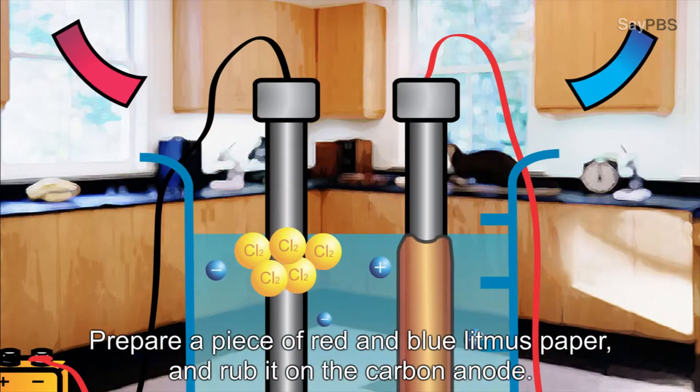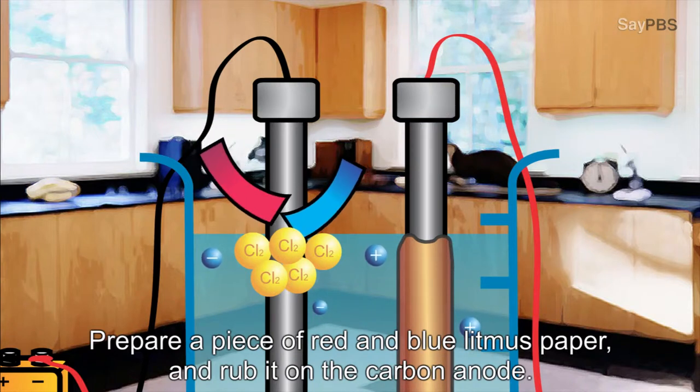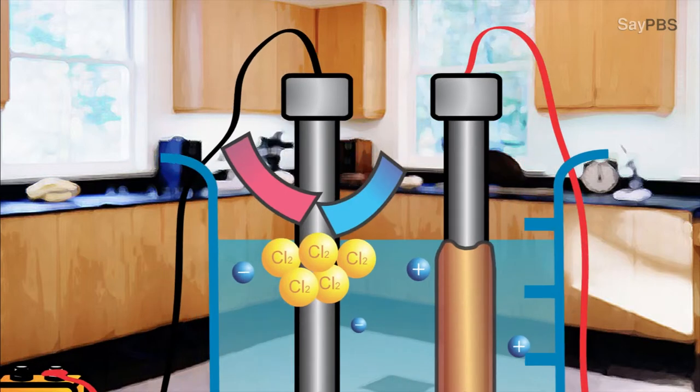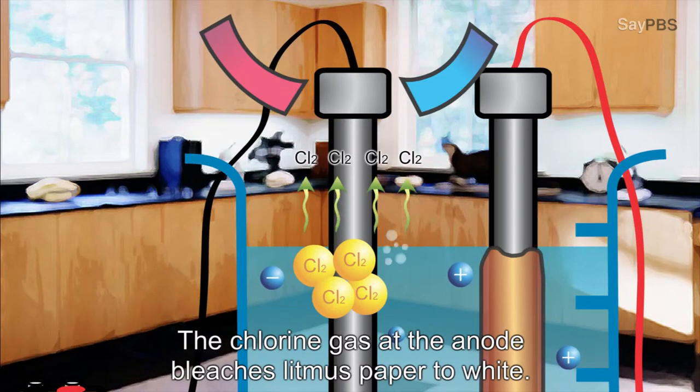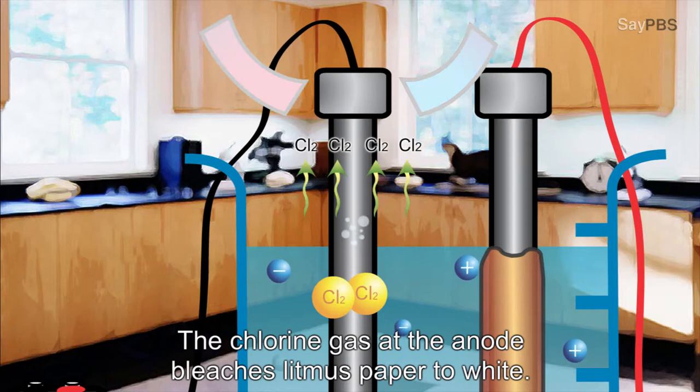Prepare a piece of red and blue litmus paper and rub it on the carbon anode. The chlorine gas at the anode bleaches litmus paper to white.